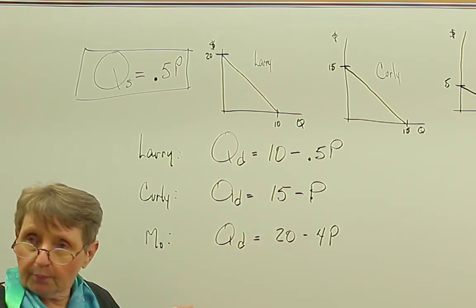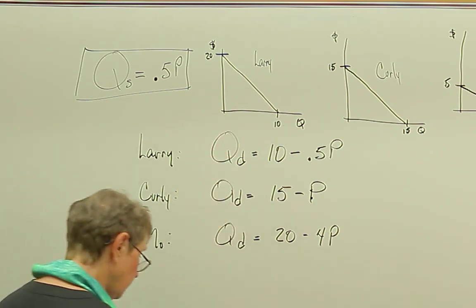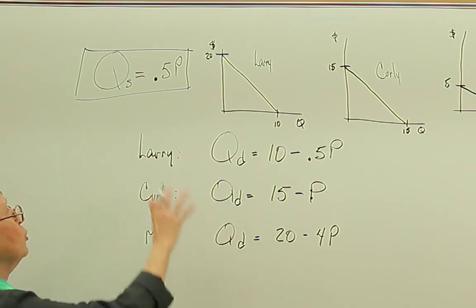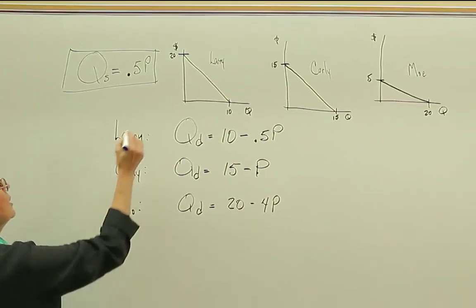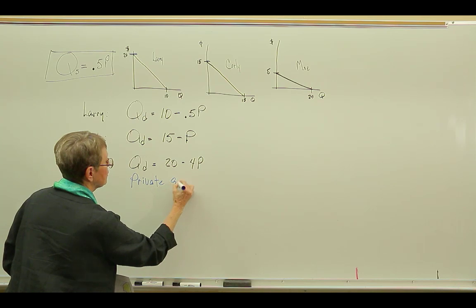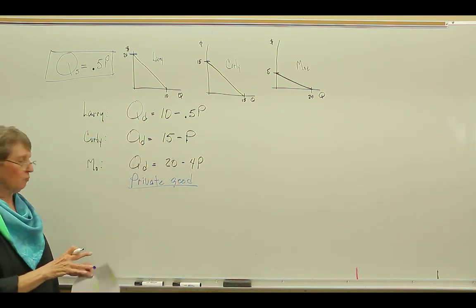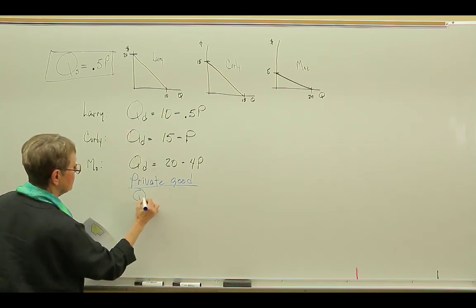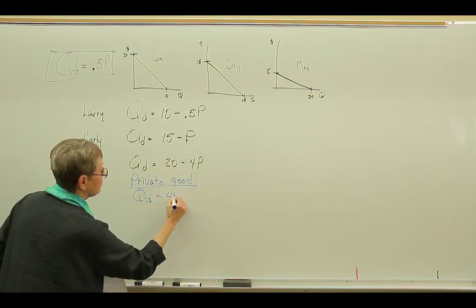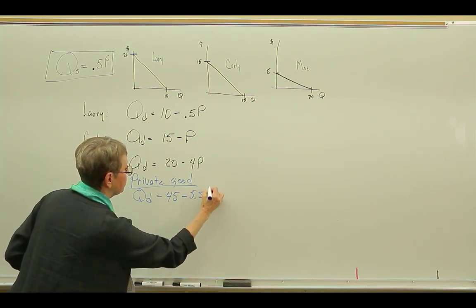Then what would the market demand look like? If these were the demands for a private good, what would the market look like? What would the price be, and what would the output be? And so we can do that by summing up these demand curves, and we'd get the market demand curve. Let's treat these demands as if they are for a private good. So I want to sum up these three demand curves.